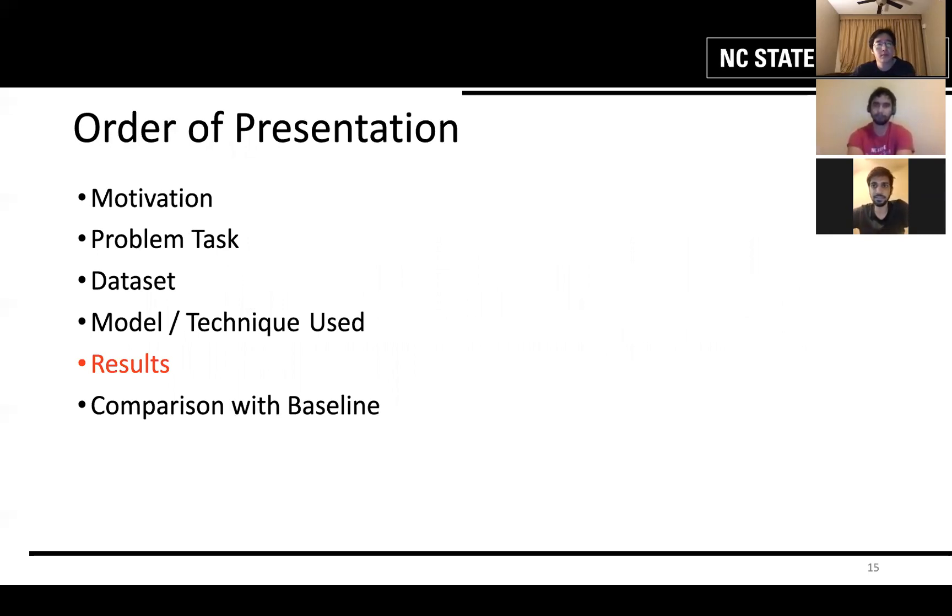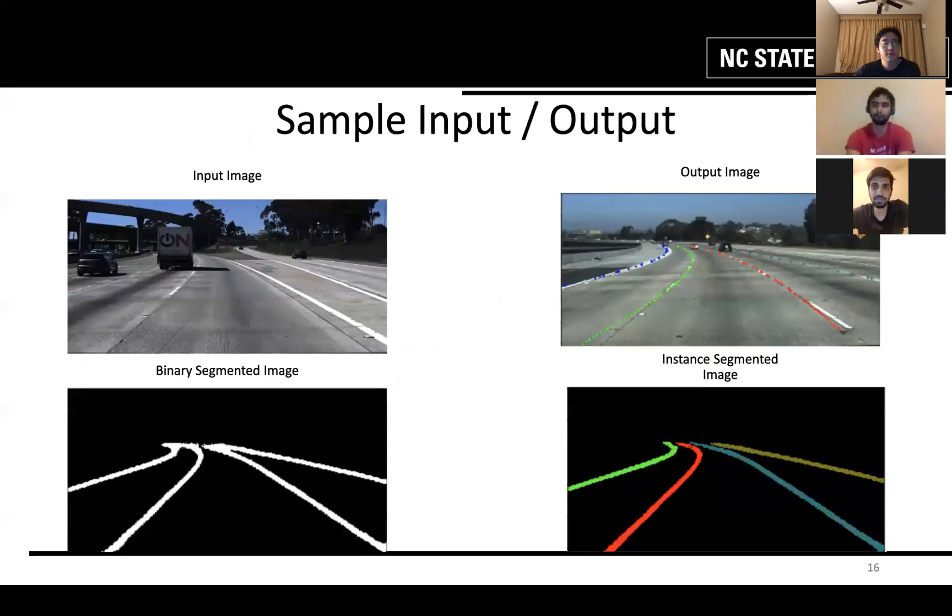So let us now take a look at our results. This is our output result for one of the test images. The first one on the top left is the actual input image. The images on the left and the right bottom are the binary segmentation and instance segmentation models output images respectively. The image on the top right is our final output image.